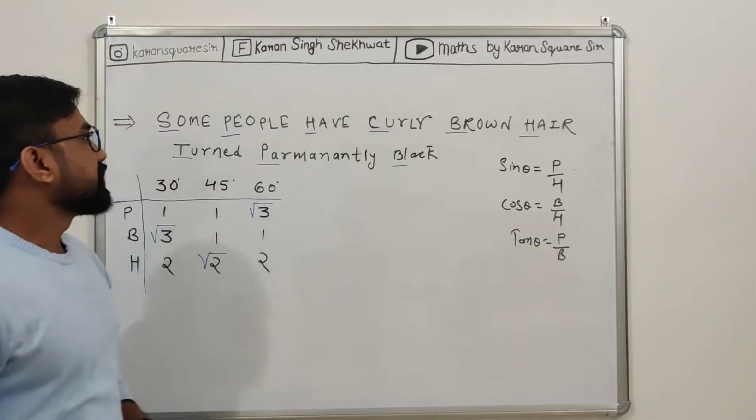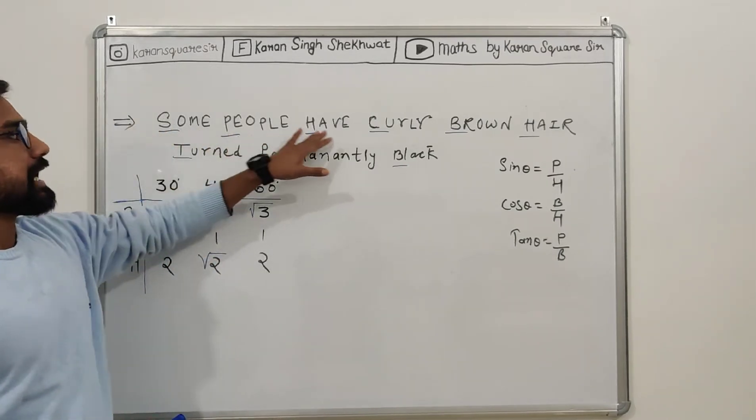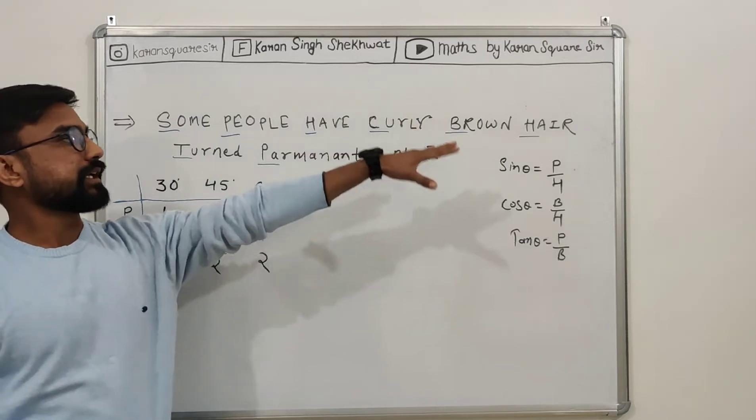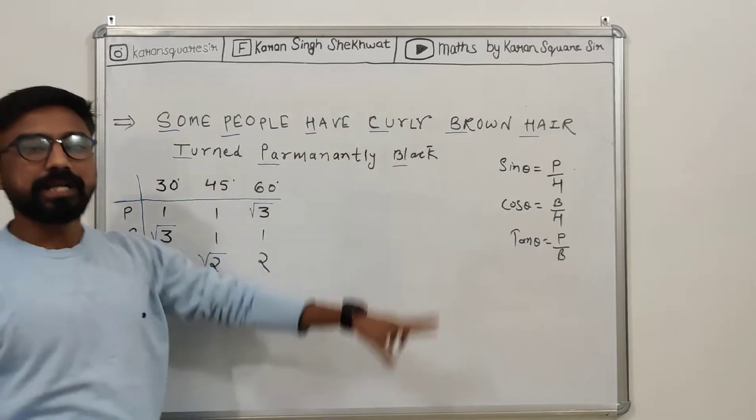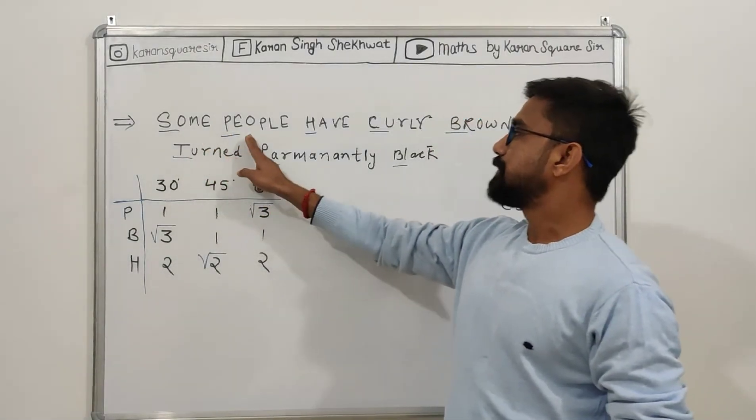Before starting, I am going to give you a line which will be helpful. Some people have curly brown hair and turn permanently black. Now you will see how helpful this is.